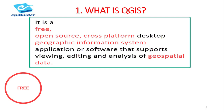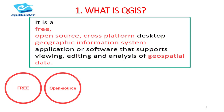By free, I mean users, besides being able to download and install the software for free, also have the freedom to run, copy, distribute, study, change, and improve the software. By being an open source software, the source code is released under a license in which the copyright holder grants users the rights to use, study, change, and distribute the software to anyone and for any purpose.